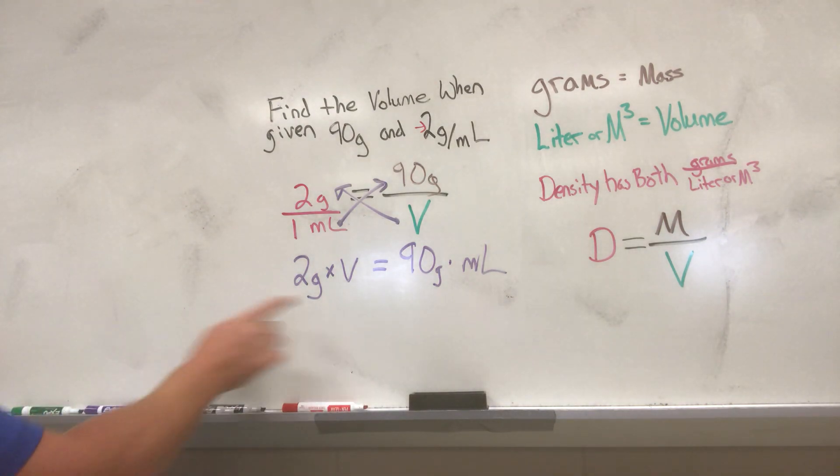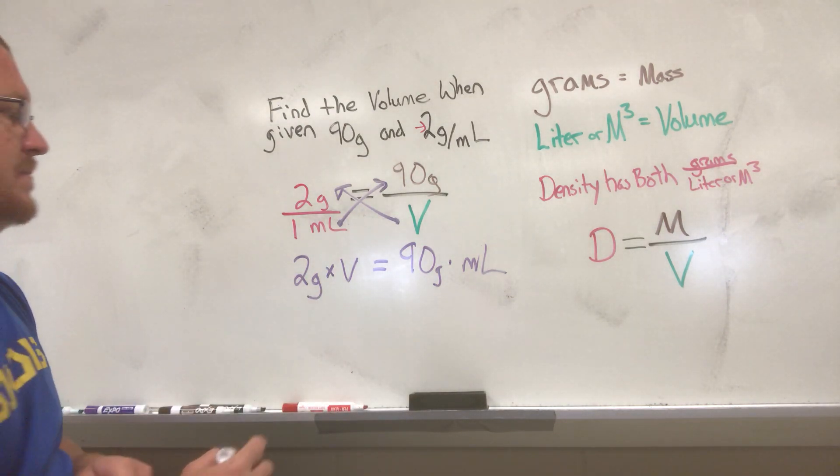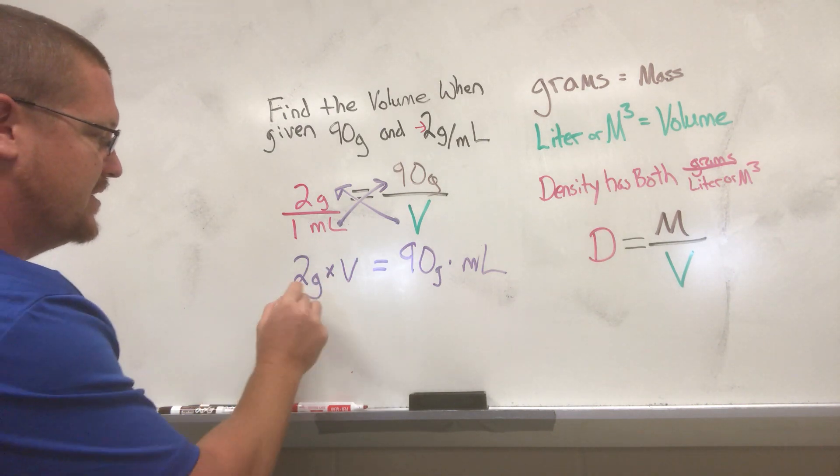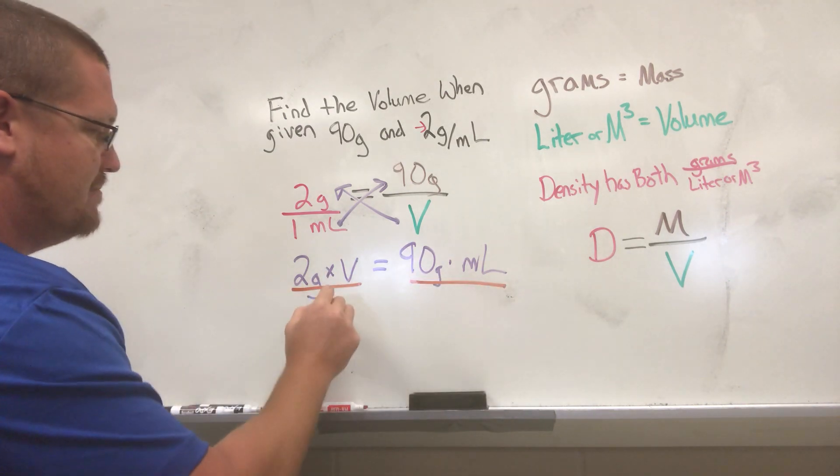So our variable is still not by itself, so we must continue. We're gonna do the opposite action here, we're gonna divide both sides by 2 grams.